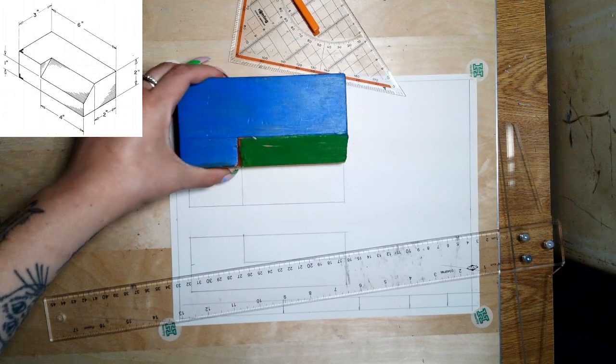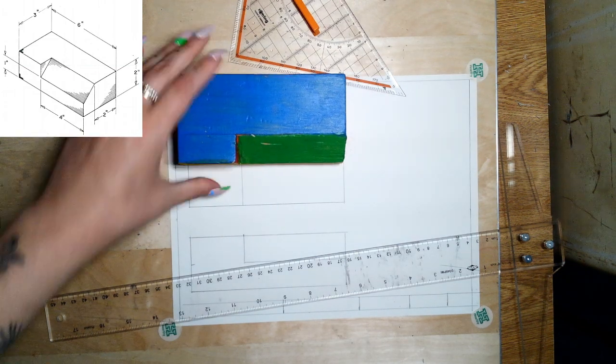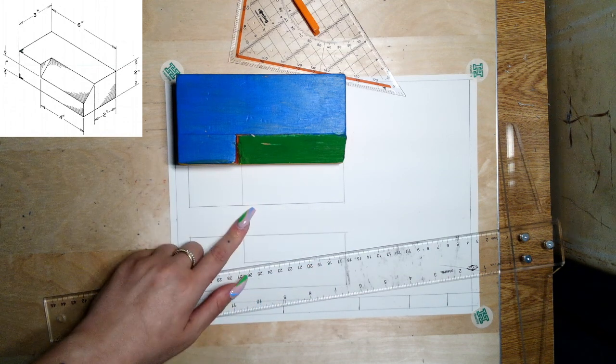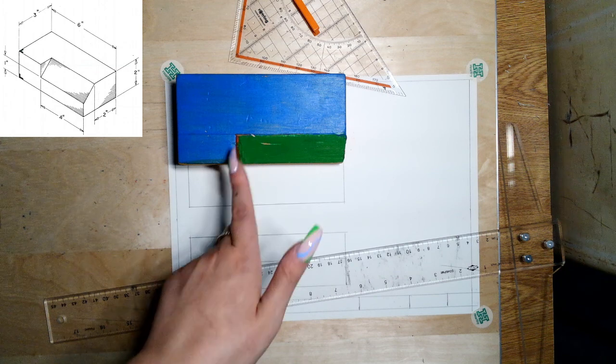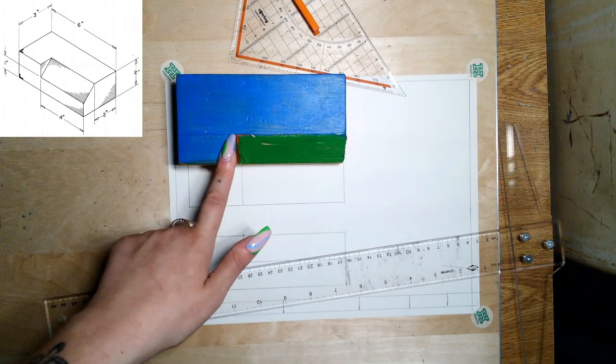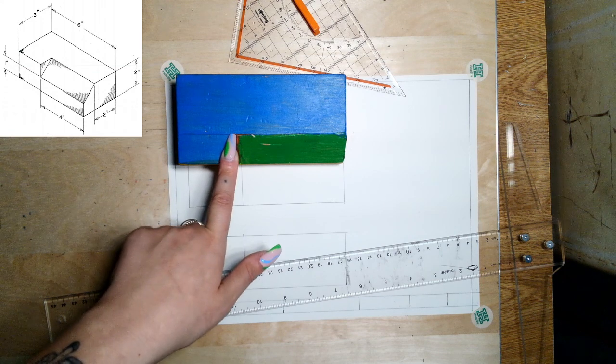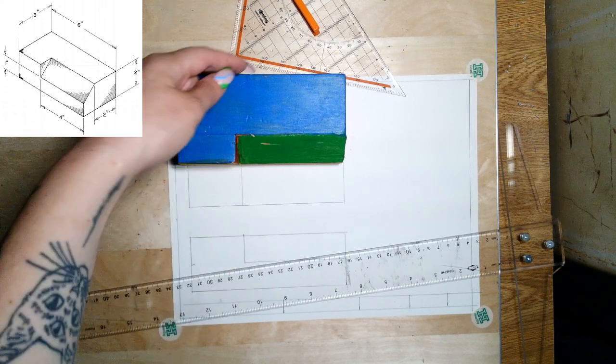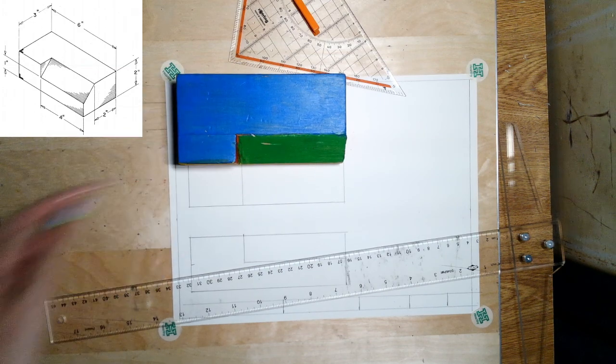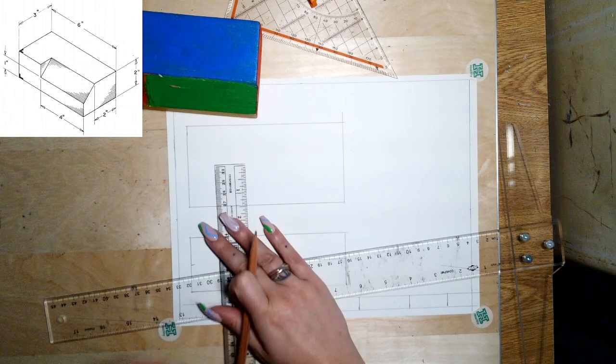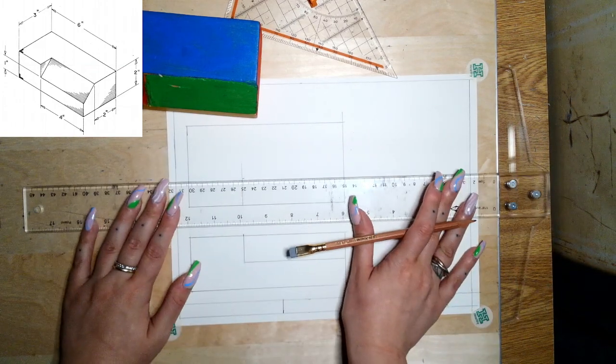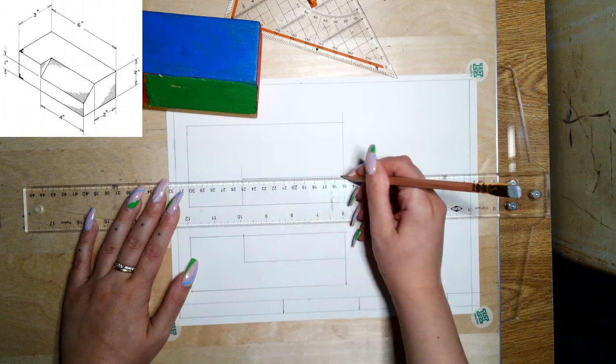And then again, I need to signify that there's that slope that I can see in the top. So I already have that it's four inches over from this right side, but I just need to know how far back, what's the depth of it. And so it has a depth of one because we can see in that little drawing in the corner that from the very back to where that slope is, is two. And if the whole thing's three, then that's one inch. I'm just going to make a little mark at one.